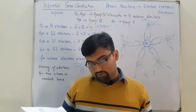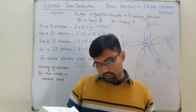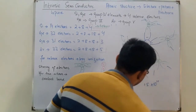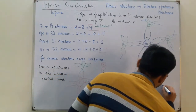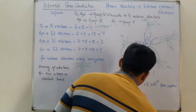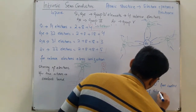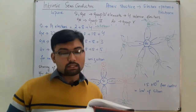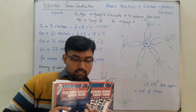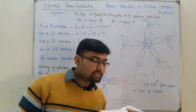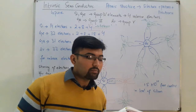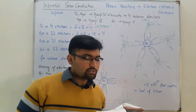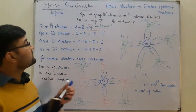At room temperature, there are approximately 1.5 × 10¹⁰ free carriers in 1 cm³ of intrinsic silicon material — that's 15 billion electrons present in a space smaller than a small sugar cube. The term 'intrinsic' is applied to any semiconductor material that has been carefully refined to reduce the number of impurities to a very low level.